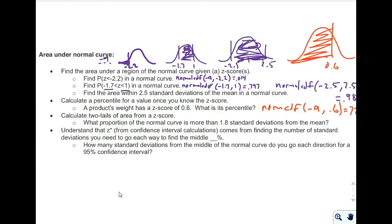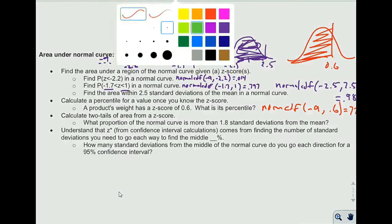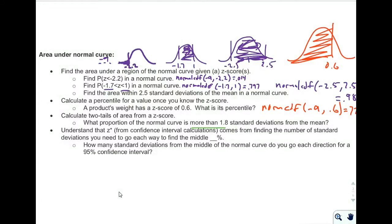Continuing on here, it says calculate two tails of area from a z-score. So what proportion of the normal curve is more than 1.8 standard deviations from the mean? More than 1.8 standard deviations. Sketch our normal curve. 1.8, negative 1.8. More than that distance away means we're looking at the tails. We're not looking at the middle.